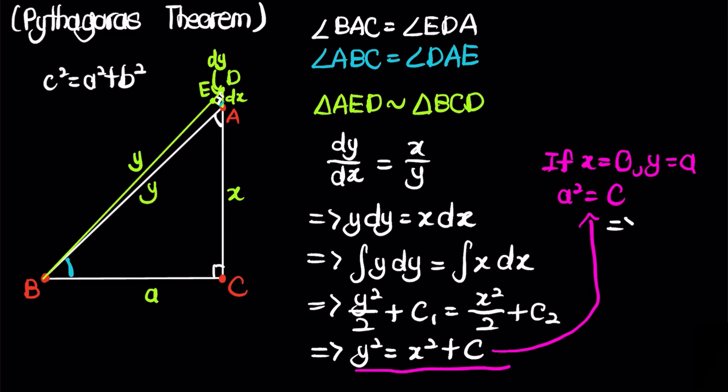So all in all, this means that we have that y squared is equal to x squared plus a squared. And this is what we want, right? The Pythagorean theorem. So therefore, this proves the famous theorem. So now we are done.